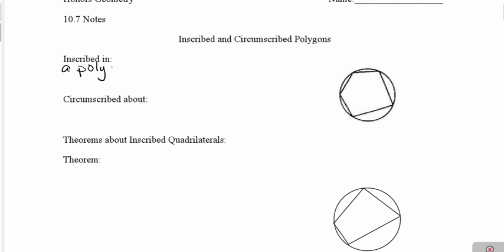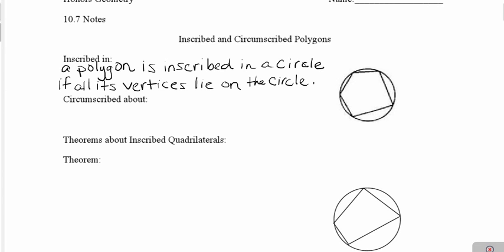if all of its vertices lie on that circle. So if we look at that diagram to the right, that pentagon would be inscribed in the circle because notice that each of the vertices of the pentagon lie on that circle.